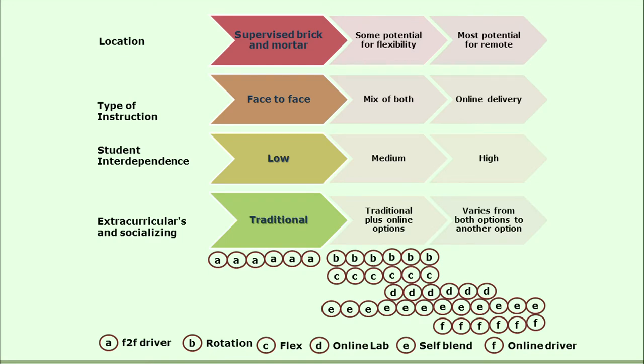As we had seen the earlier four models in comparative manner through a diagram, here also we are going to see all six models so that we can better compare them with one another. In this diagram, the six models are denoted by A through F on the x-axis. On the y-axis, different attributes are plotted: extracurricular and socialization possibilities, student independence, type of instruction, and location.